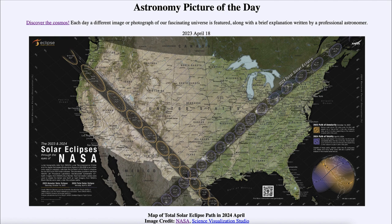An annular solar eclipse occurs when the moon passes directly in front of the sun, but at a time when the moon is further away from Earth. That makes the moon appear a little bit smaller in the sky, and it cannot completely block out the sun. So if you are on that path going from Oregon down through Texas, you will see what we call an annular solar eclipse.